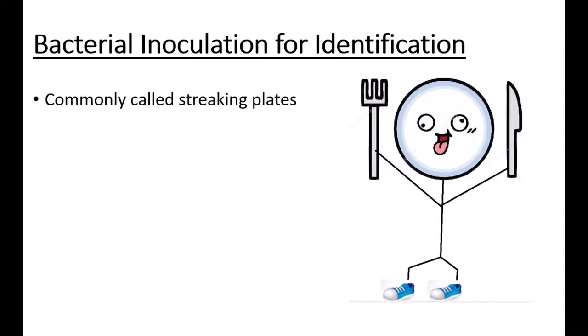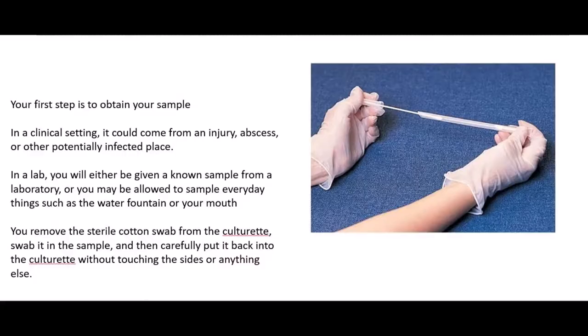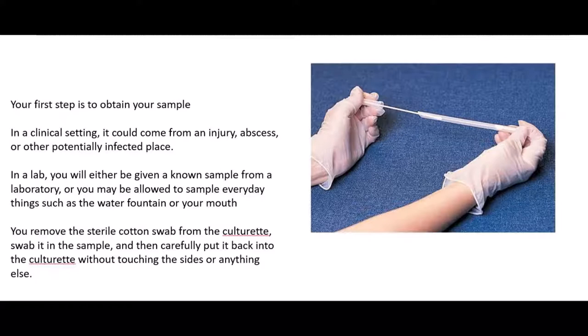Now the next step is obtaining your culture inoculation. You have to obtain a sample, and in a clinical setting it might be an injury, an abscess, any kind of infected place. In the lab it may be a known sample or an everyday thing such as a water fountain or your mouth if it's allowed. You remove the sterile cotton swab from the culturette, swab it in your sample, and then carefully put the culturette back in without touching anything else.